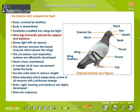Hindlimbs are forwardly placed for support and balance. Bones are light with air spaces. The sternum anchors the breast muscles which power the wings.